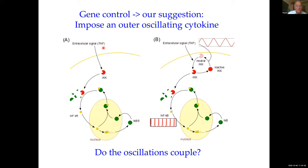This system is triggered from outside by tumor necrosis factor, TNF-alpha, at a certain level. We suggested some years ago that if you try to oscillate this external TNF in time, it might couple — as you see inside here — to the internal oscillator. The whole question is: does this external oscillator couple into the internal one? And of course, I wouldn't be talking here if it wasn't the case. They do couple — sometimes they don't, but here they do.